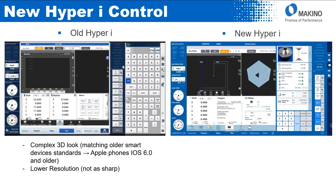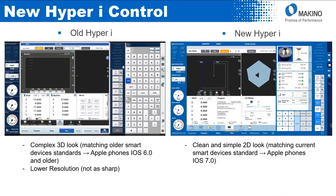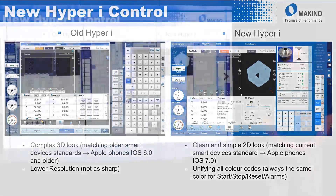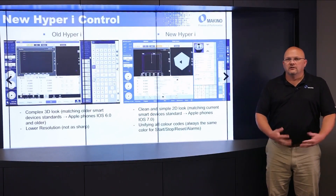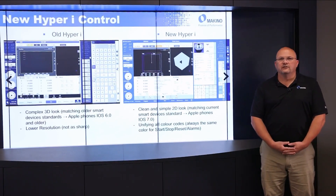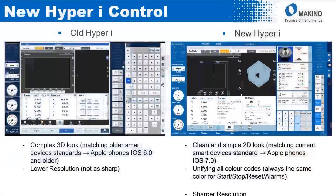The new Hyper-I is on the right-hand side. You can see it has a cleaner, more 2D look, more in line with new Apple devices and Windows 10. On the new control, we unified the color codes of all the alarm and reset messages. On the older control the color codes were not unified - we've fixed that. With the new Windows 10 version, you get a much sharper resolution.